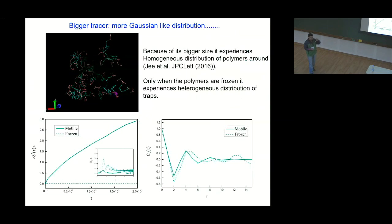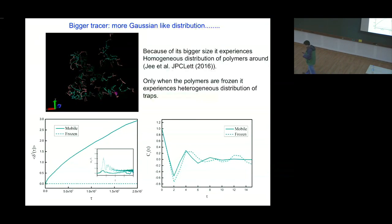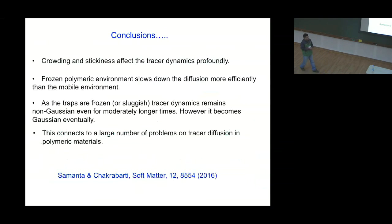We also looked at what happens with a bigger tracer — five times bigger than a monomer. With a bigger tracer, the heterogeneity averages out very fast and you are most likely to get a Gaussian displacement distribution, which is indeed what we find. This also agrees with experimental observations from a group published about a year ago.